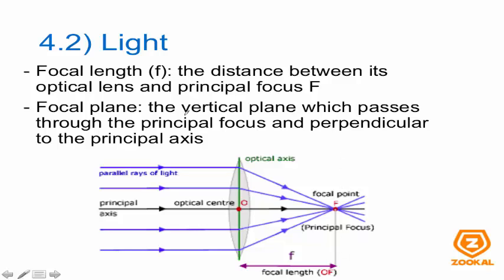The focal plane is the vertical plane perpendicular to the principal axis that passes through the principal focus. So: the optical center O is here, the principal axis is simply this horizontal line, the focal point F is the point at which all the rays converge, the focal length is the distance between the optical center and the focal point, and the focal plane is this line here — at the point where the focal point is.